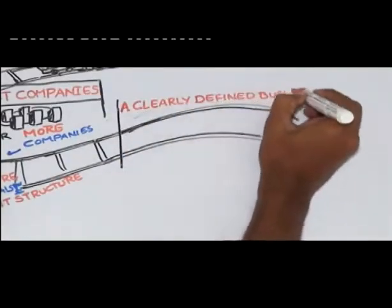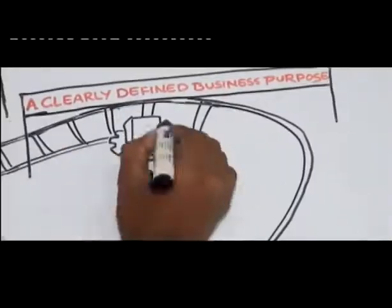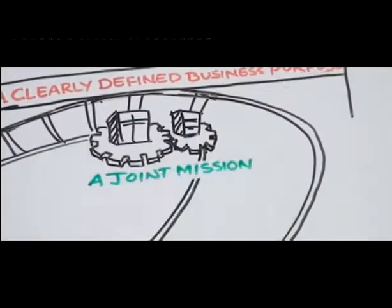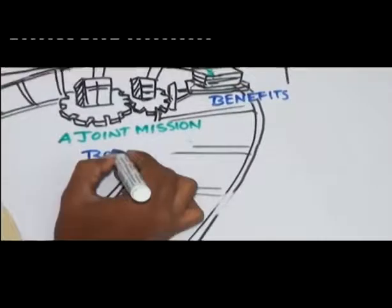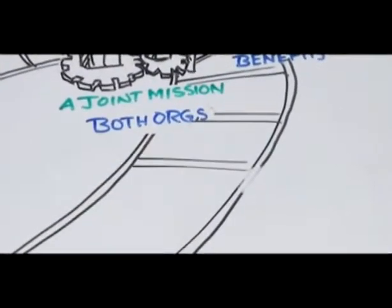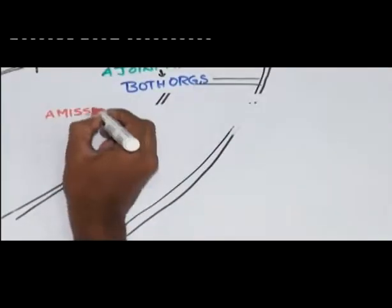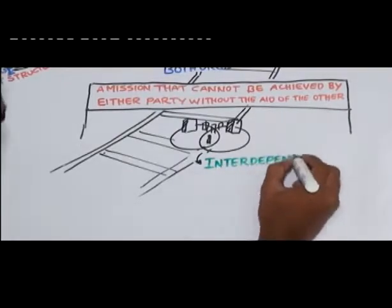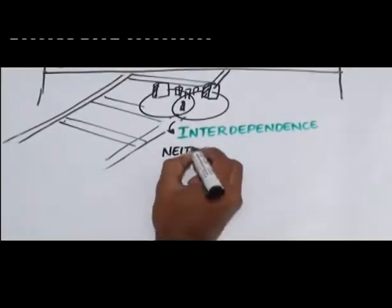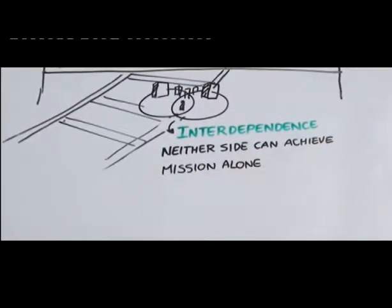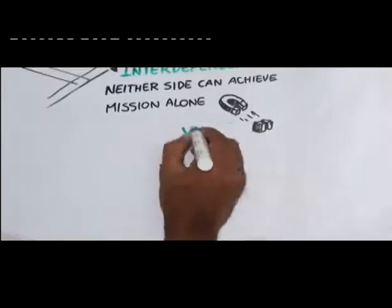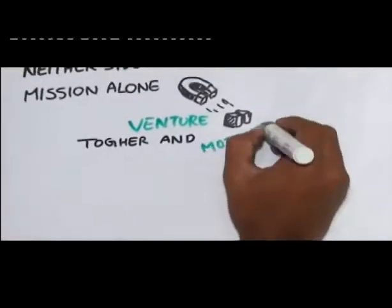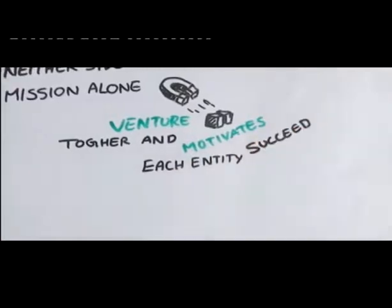Two, clearly defined business purpose. A joint mission for the venture, one that benefits both organizations, must be established up front. A mission that cannot be achieved by either party without the aid of the other. The interdependence that exists when neither side can achieve the mission alone is what holds the venture together and motivates each entity to succeed.